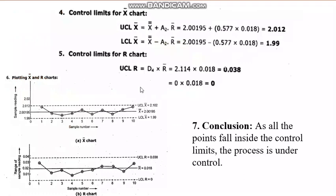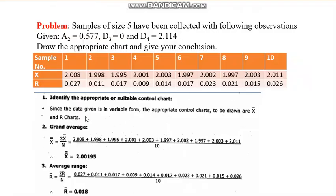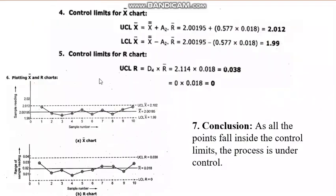The upper control limit for the R chart comes to 0.038 and the lower control limit for the R chart comes to 0. The sixth step is to plot the X-bar and R charts. Draw the center line at X double-bar, plot the UCL and LCL as dotted lines, and then plot each X-bar value such as 2.008, 1.998, and so on.